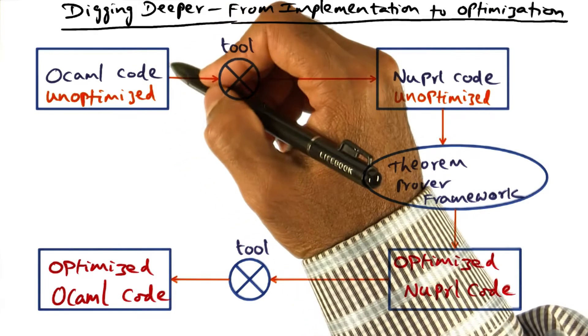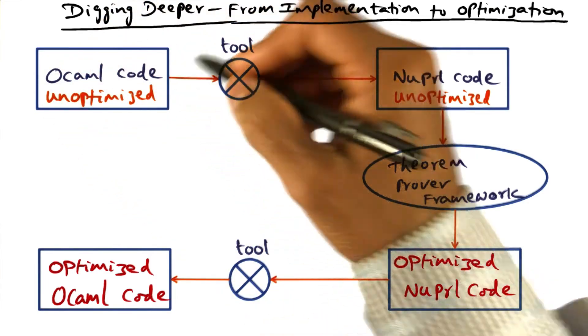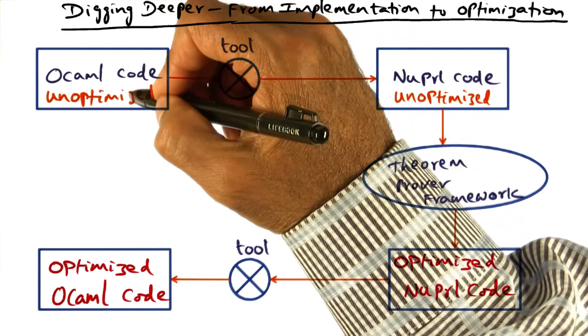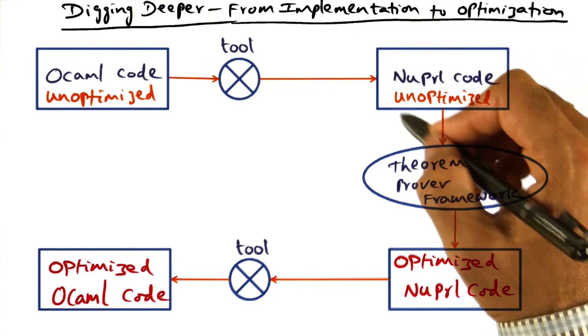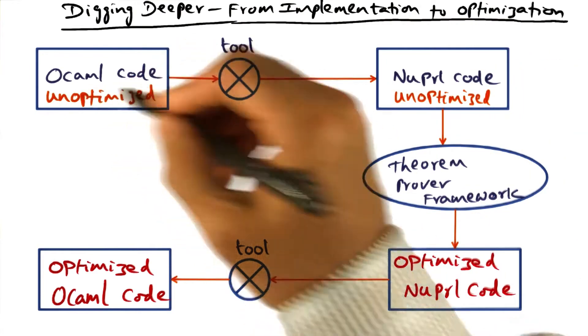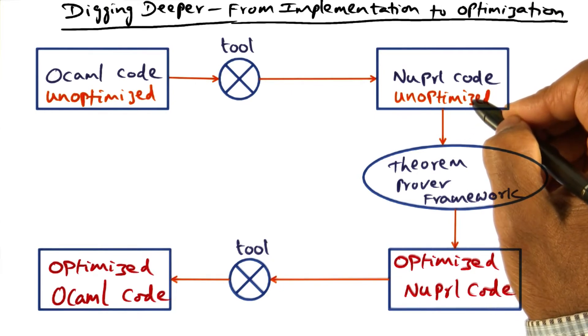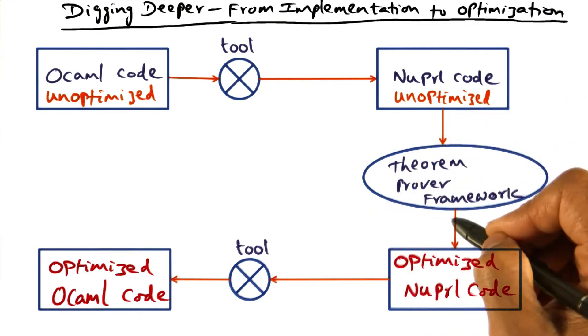Let me elaborate. First, you start with this OCaml code, which is unoptimized. And there is a tool that converts this unoptimized OCaml code to new PERL code. This is once again an unoptimized version of the original OCaml code, but it is new PERL code. And this new PERL code is at the base of this theorem proving framework.